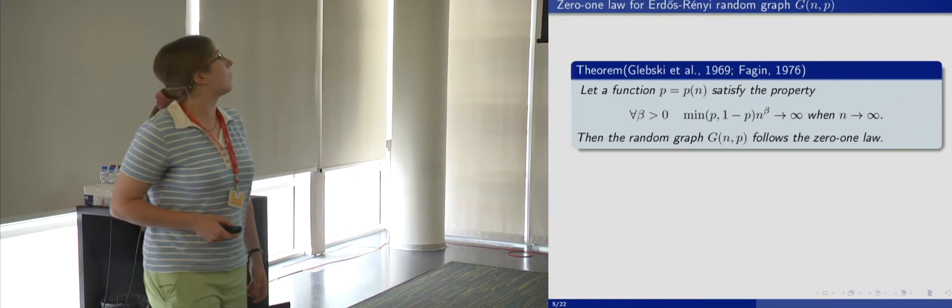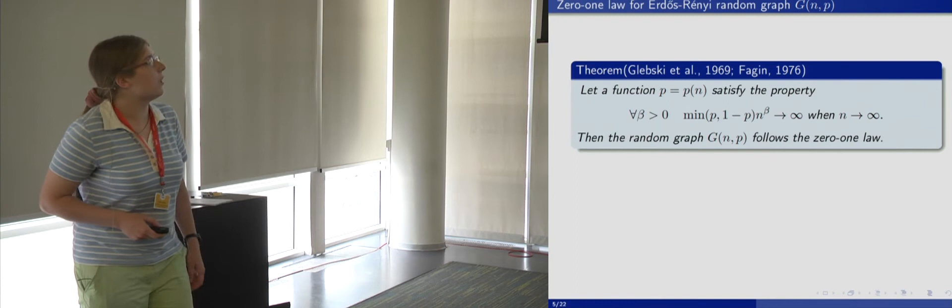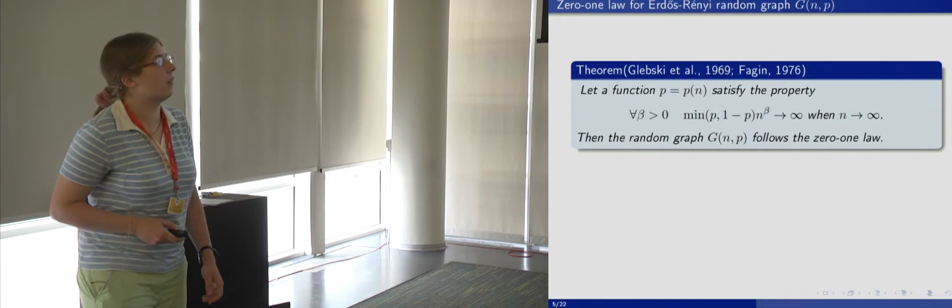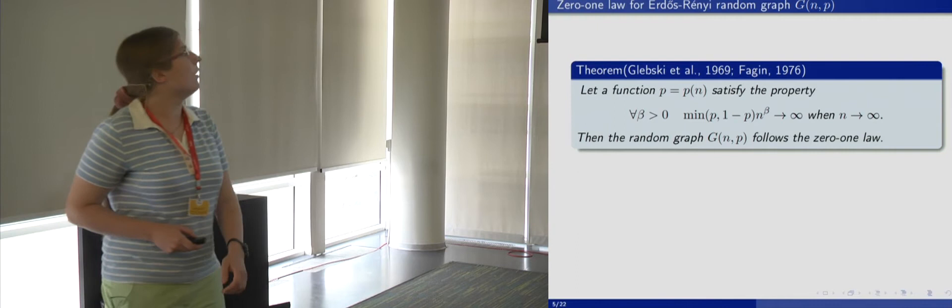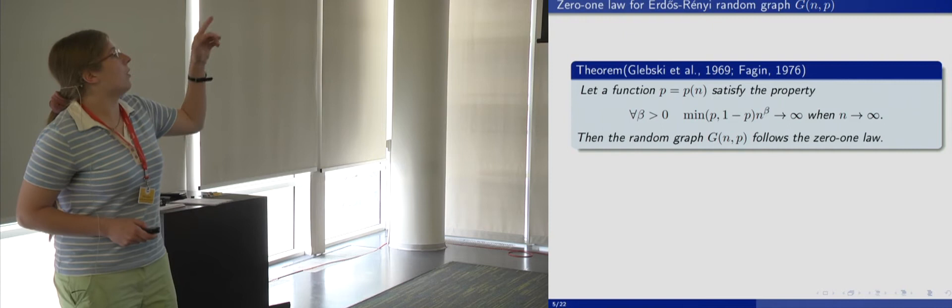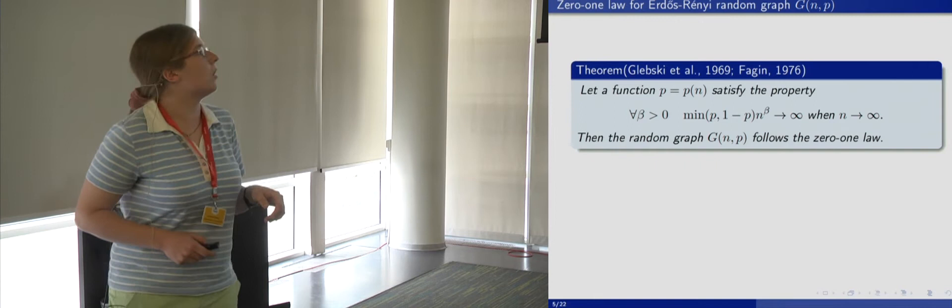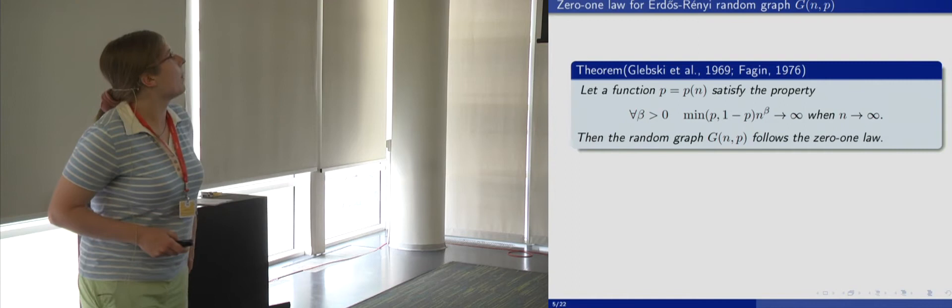Now I'll tell you about some classical results on the 0,1 law for random graph G(N,P). This theorem was proved by Glebsky and others in 1969, and then independently by Fagin in 1976. We suppose that the function P satisfies the property that it doesn't tend neither to 1 nor to 0 too quickly. Then the random graph G(N,P) follows the 0,1 law.